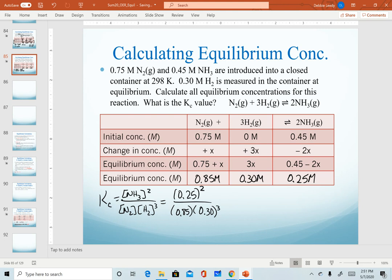Correctly. Sorry about that. Ammonia is squared, not cubed. So 0.25 squared, products over reactants, 0.85 for nitrogen, 0.30 cubed for hydrogen, and now we simply plug numbers in to get an equilibrium constant.